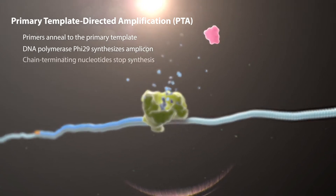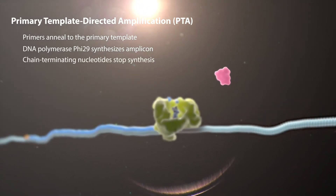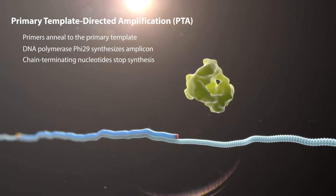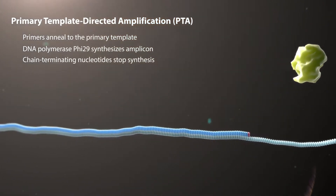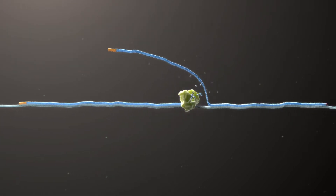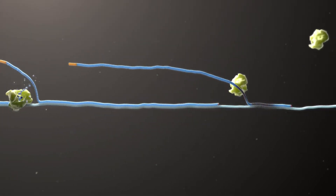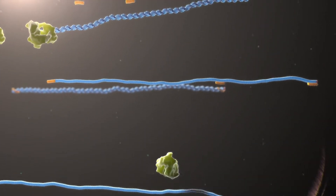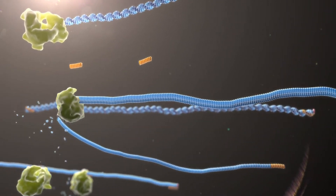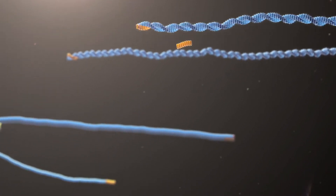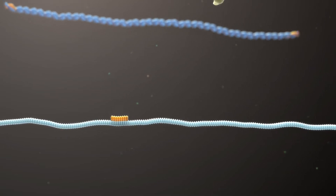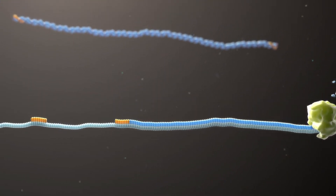Chain-terminating nucleotides are then introduced, restricting amplicon length by disengaging the Phi-29 enzyme and preventing further extension of the amplicon. The shorter amplicons have a significantly reduced propensity for reuse, replicating only a handful of times before becoming fully double-stranded. This preferentially directs the primers back towards the primary template of interest.